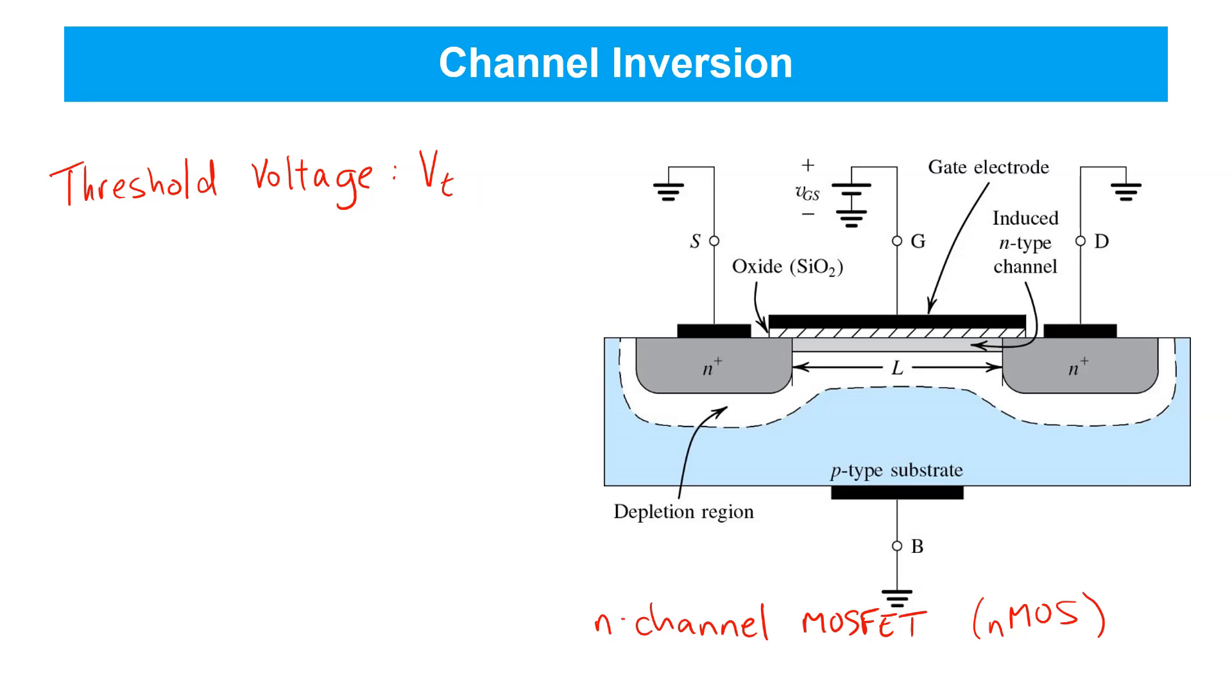We define the overdrive voltage and the symbol VOV as the amount by which the gate source voltage exceeds the threshold voltage. That is, VGS minus VT. This is a key parameter that tells us how inverted the channel really is.